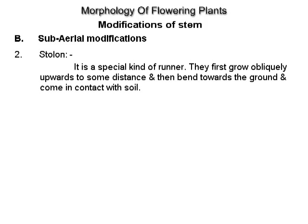Stolon. It is a special kind of runner. They first grow obliquely upwards to some distance and then bend towards the ground and come in contact with soil. Example: fern, Mentha piperita.